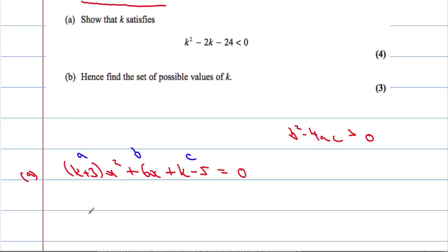So b², 6² minus 4 times a is (k + 3), and c is (k - 5). And this has got to be greater than 0, because we've got two real roots.